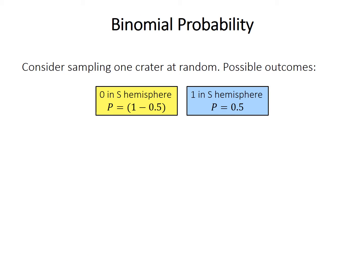To answer that, we need to learn about binomial probability. If the craters are equally divided and you choose one crater at random — this is called a trial — there are two possible outcomes. The crater is either not in the southern hemisphere, which we call a failure, or it is in the southern hemisphere, which we call a success. The probability of success is 0.5, and the probability of failure is one minus the probability of success, so also 0.5 here — though remember the expectation doesn't have to be 50%.